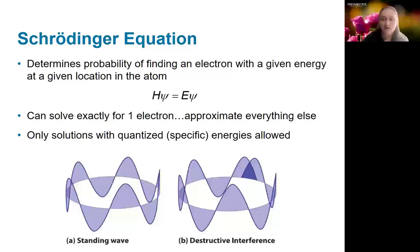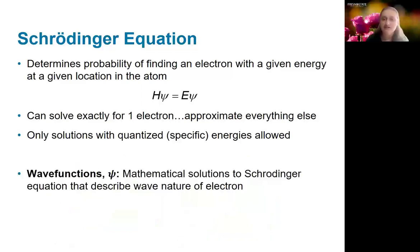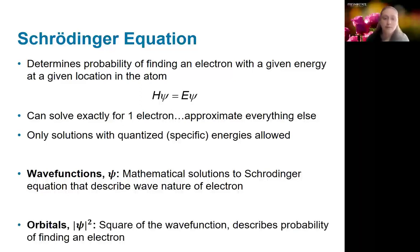Those standing waves are what we call the wave functions. Those are just mathematical solutions that describe the wave nature of the electron. It turns out that the wave functions aren't actually the most useful thing physically. It's much more useful to look at the probability or the orbitals. So the orbitals are basically just the square of the wave function. So we take this function and we square it. This gives us a way of talking about probability, sort of how likely the electron is to be at a given region of space.